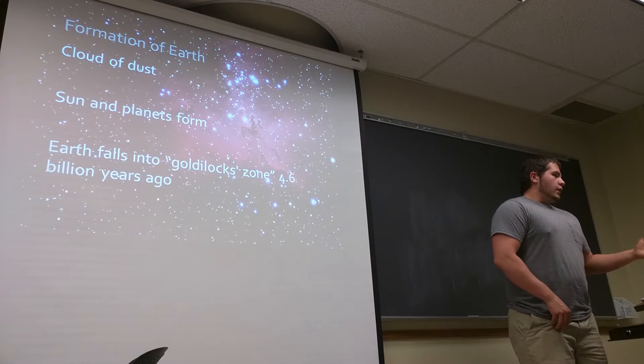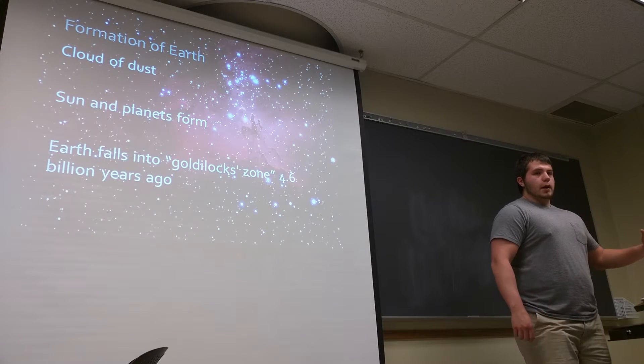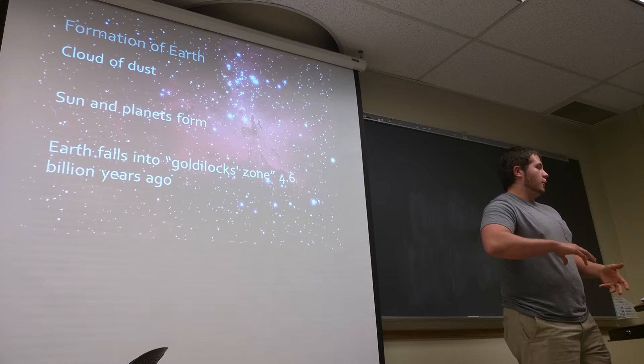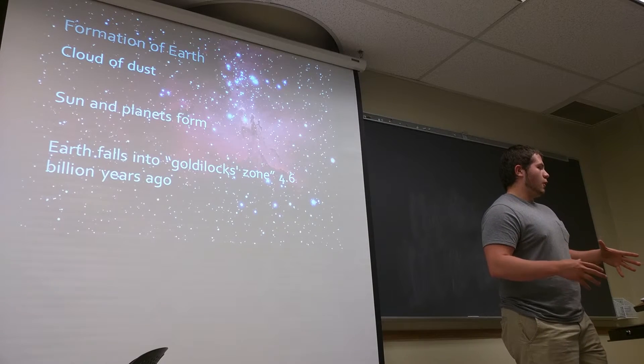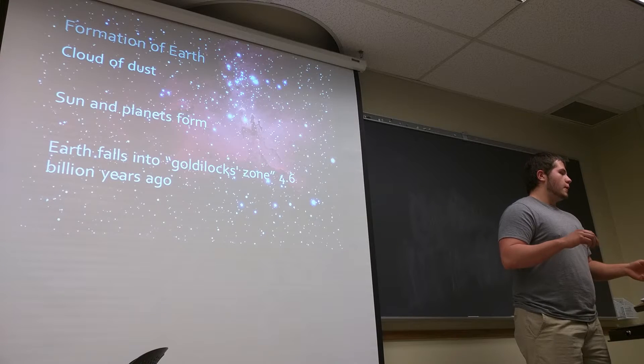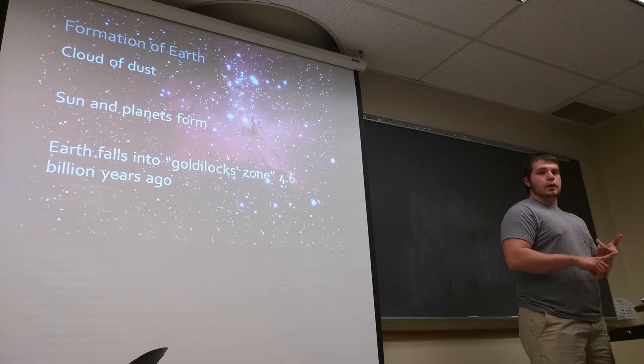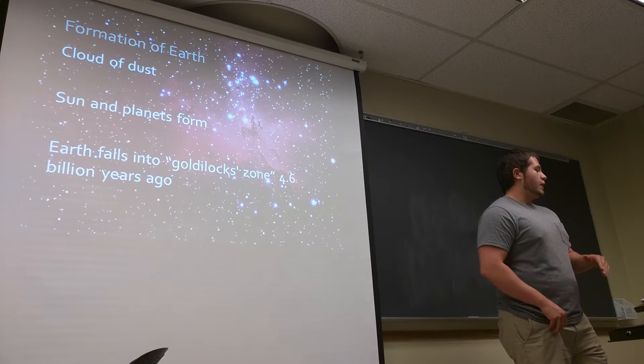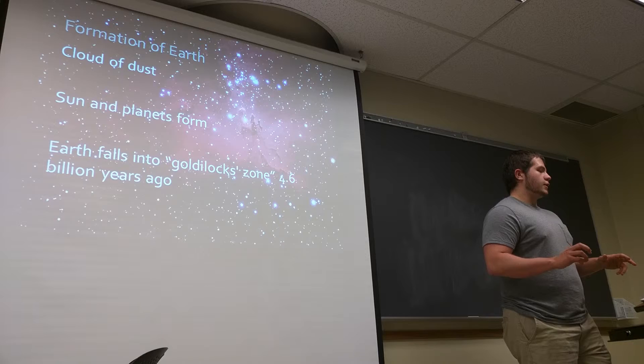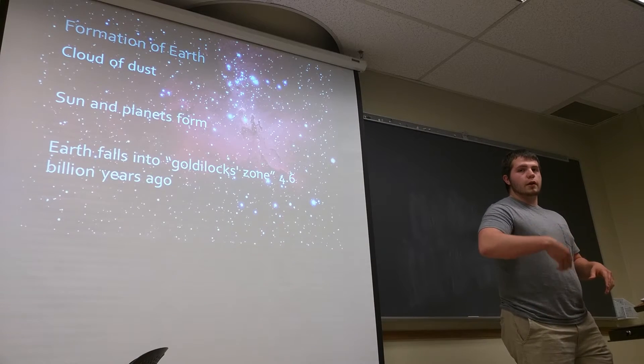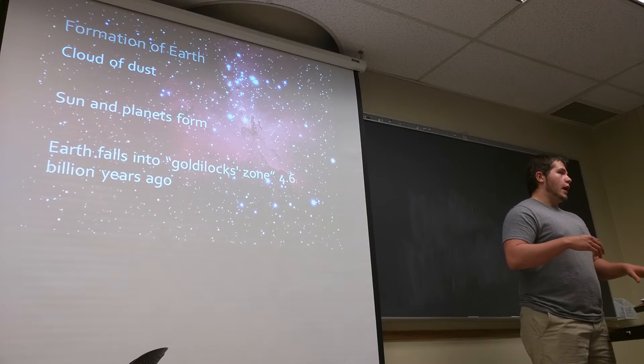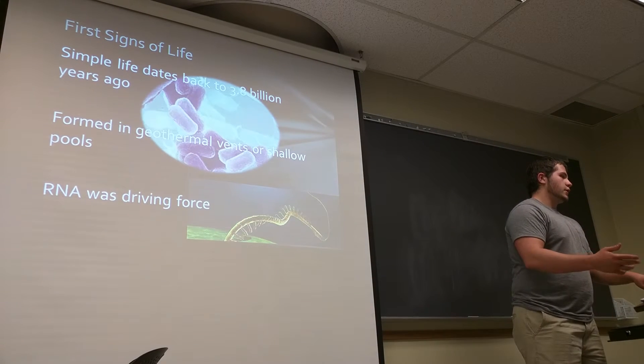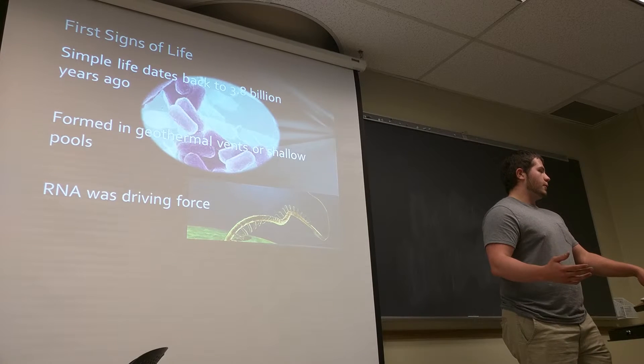So, after we form the universe, we jump ahead, probably about another 10 billion years to the formation of Earth and the solar system. So, Earth and the solar system pretty much formed from a large cloud of dust in space. All these elements came together and formed the sun, they formed the planets, the asteroid belt, the whole nine yards. And Earth got really lucky and fell into this Goldilocks zone, which is a zone around the star that actually provides for a habitable place on a planet. That happened about 4.6 billion years ago.